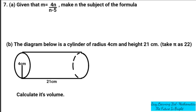Question 7a was as follows: given that m is equal to 4n over n minus 5, make n the subject of the formula. So students were asked to make n the subject of the formula.